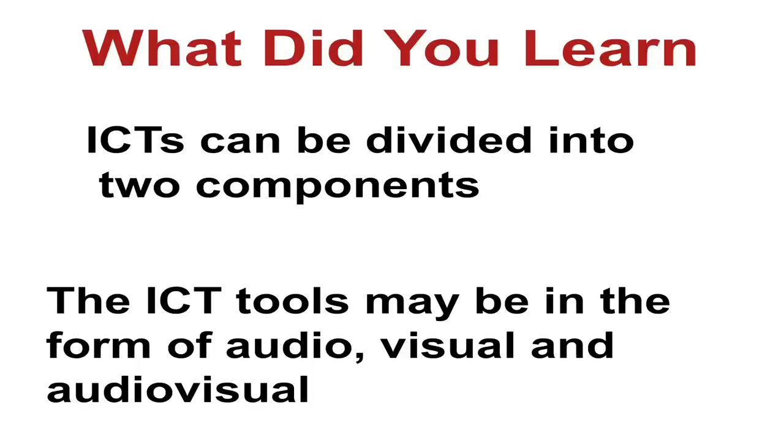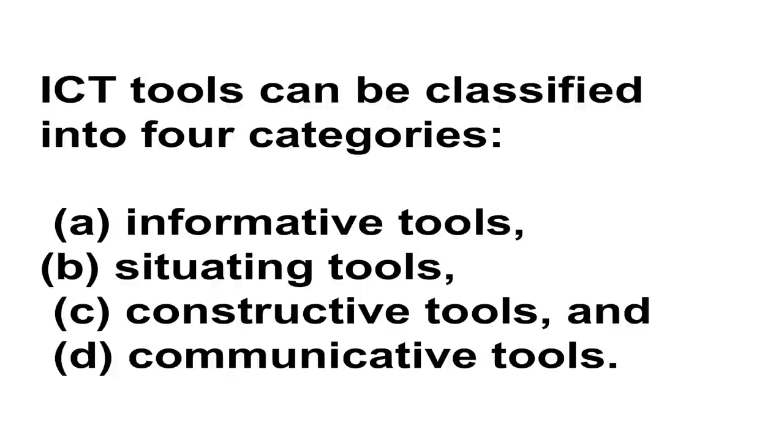Coming to the end of our learning — what did you learn? Firstly, ICT can be divided into two components. Secondly, ICT tools may be in the form of audio, visual, and audio-visual. Thirdly, ICT tools can be classified into four categories: informative tools, situating tools, constructive tools, and communicative tools. With this, we come to the end of this video lesson. If students can learn through videos, we should prepare video lectures and show them to our students.